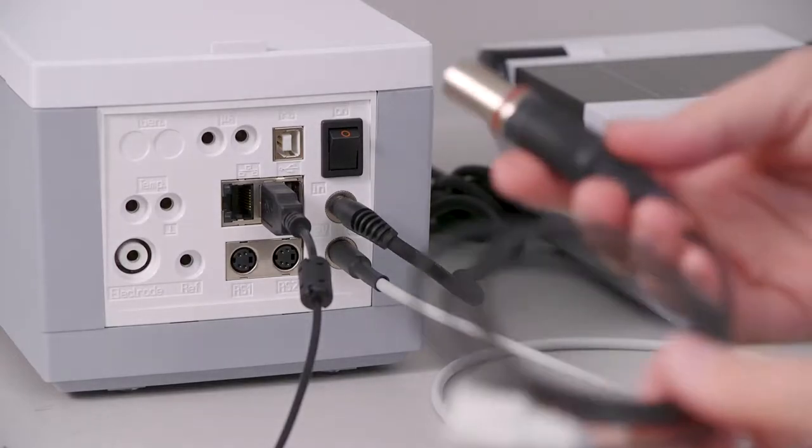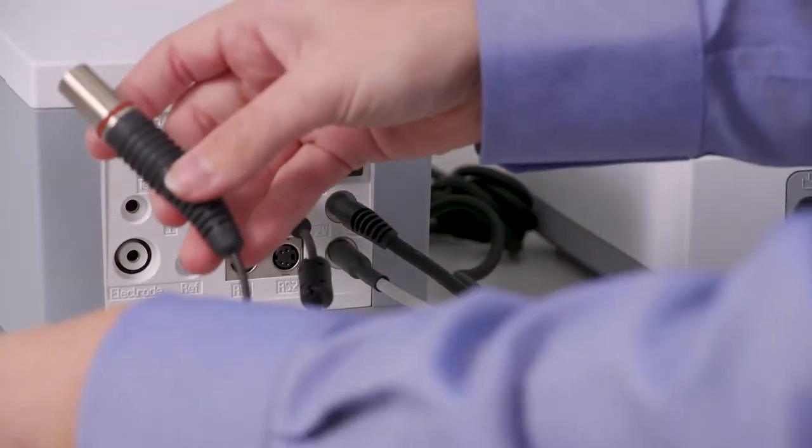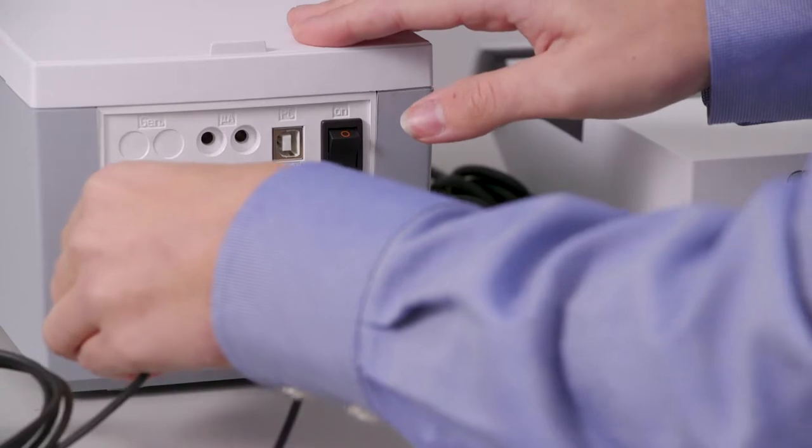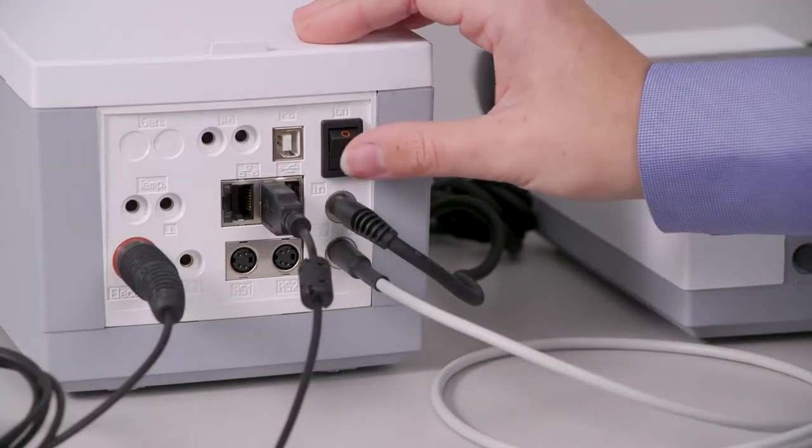The last thing to set up here is the electrode cable. We'll just plug that into the DIN port on the bottom left-hand side. Once that's done, you're ready to turn it on.